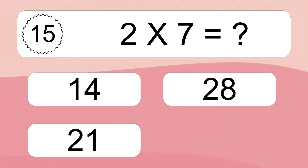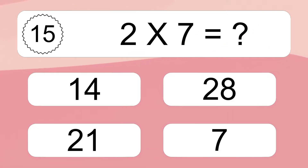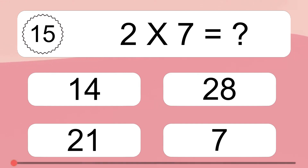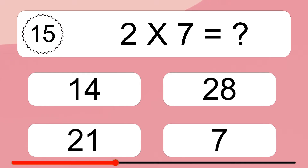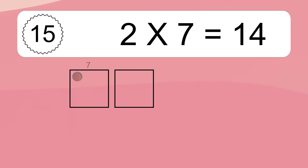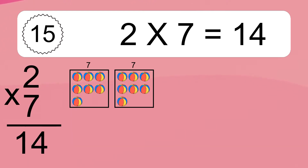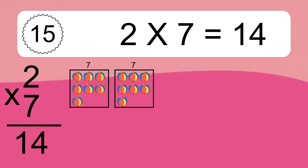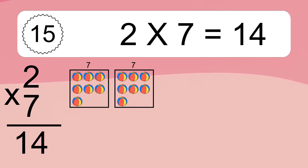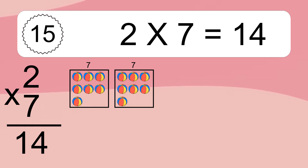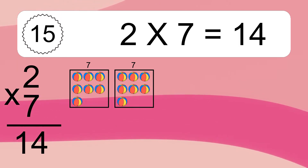2 times 7 equals what? 2 times 7 equals 14. We have 2 boxes and each box has 7 colorful balls inside. If you count all the balls in all the boxes together, you will have 2 times 7 balls. This equals 14 balls.